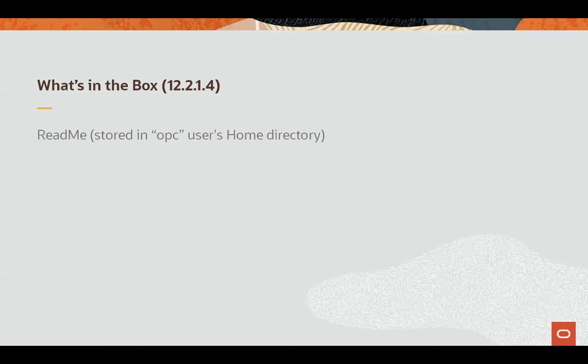While we're waiting for provisioning, let me go through what's in the box. You'll get a README file stored in the OPC user's home directory — 'Oracle Public Cloud' is what that stands for. It's also available on the Linux desktop, and we do have a full X server and desktop running. If you want to use the Forms Builder or other tools with a UI, you can VNC into this machine and have that desktop. The installation locations are all in this file — where is the database, where is the WebLogic server installation, where is the JDK.